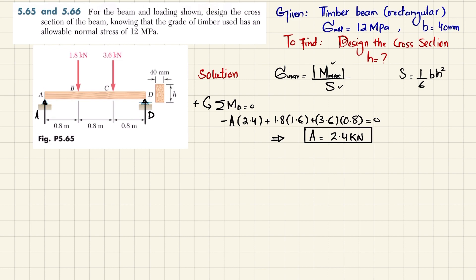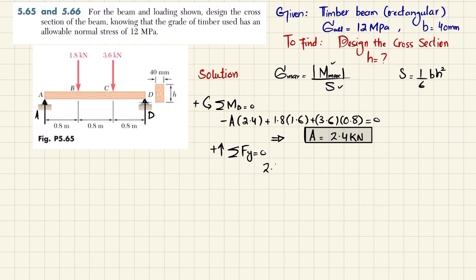Now find D using the sum of forces in the y-direction equal to zero: 2.4 − 1.8 − 3.6 + D = 0, which gives D = 3 kN.